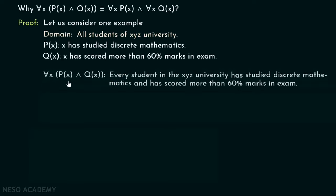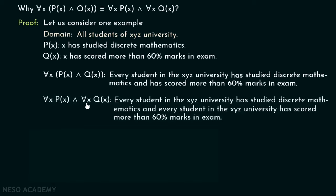The statement 'for all x P(x) ∧ Q(x)' means: every student in XYZ university has studied discrete mathematics and has scored more than 60 percent marks in exam. Similarly, 'for all x P(x) and for all x Q(x)' means: every student in XYZ university has studied discrete mathematics, and every student in XYZ university has scored more than 60 percent marks in exam.